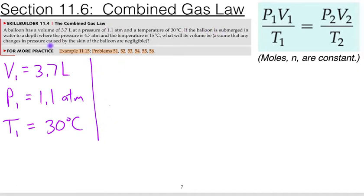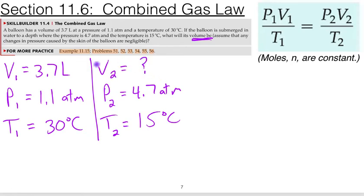And then it says when the balloon is submerged in water, now we have a new pressure. So our second pressure is at 4.7 atmosphere. And the temperature changes. So our second temperature is 15 degrees Celsius. And then there we are. We want to know the volume of this balloon at these new conditions here. So that's our question mark. That's what we'll be solving for using the combined gas law equation.